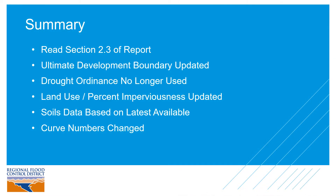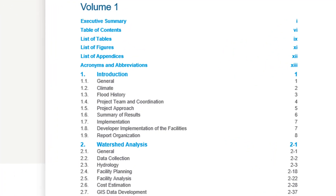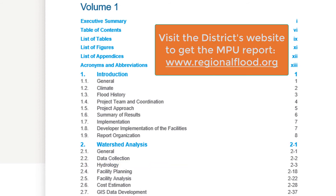To summarize, we have talked about five significant changes made during the 2018 MPU: revisions to the ultimate development boundary, elimination of the drought ordinance boundary, and updates to the land use and soils data which impacted the curve numbers. If you want more detailed information, everything discussed in this video is documented in detail in the final 2018 MPU report. Section 2.3 specifically talks about all of the hydrologic analysis and methodology. You can get the report from our website at www.regionalflood.org.